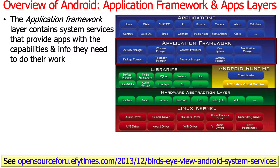There's this layer called the Application Framework Layer. I never quite understood the name because it's actually a bunch of frameworks, so it should be the Application Frameworks layer. But one of the things it provides is a bunch of system services that allow apps to get information and capabilities they need in order to do their work without having to reinvent all that stuff from scratch.